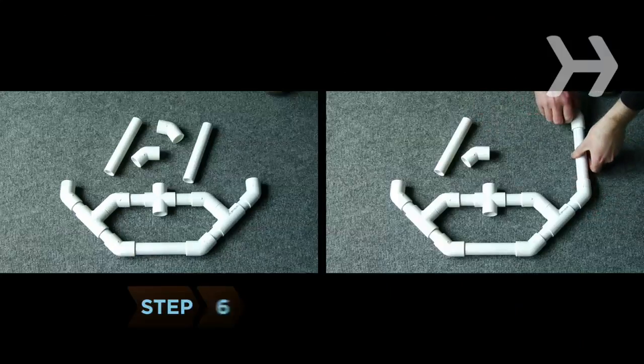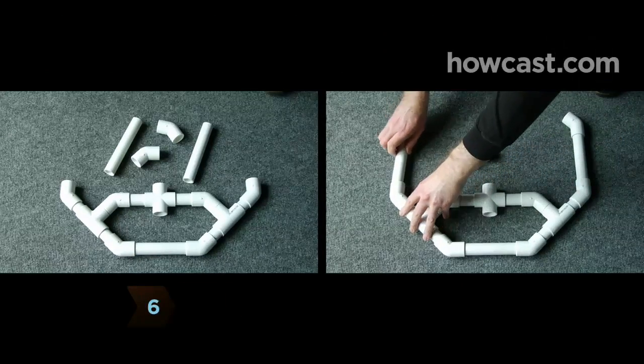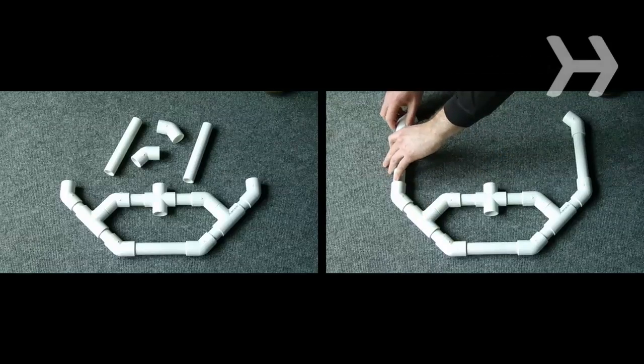Step 6. Add a pair of 6-inch PVC pipes to the open ends of the elbow connectors. Attach elbow connectors to their open ends.